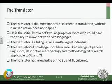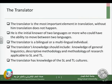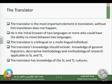Element number three is the translator — it is you who steps into the process, hopefully if you are interested in becoming a translator. The translator is the most important element in translation; without the translator, translation doesn't happen. The translator is the initial knower of two or more languages, with the ability to move between them. The translator is a bilingual or multilingual individual.